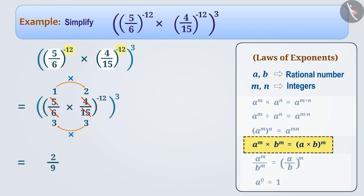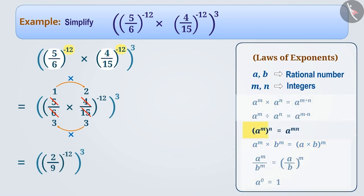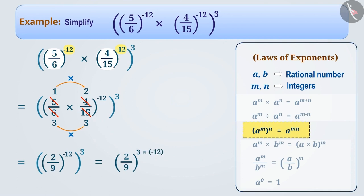In this way, the given question becomes (2/9) to the power minus 12, whole to the power 3. To solve this, the rule a to the power m, whole to the power n, equals a to the power m×n will be used. By applying this, (2/9) to the power minus 12, whole to the power 3, can be written as (2/9) to the power (3 × minus 12), which equals (2/9) to the power minus 36. By using the rules correctly like this, you can solve difficult questions in minutes.